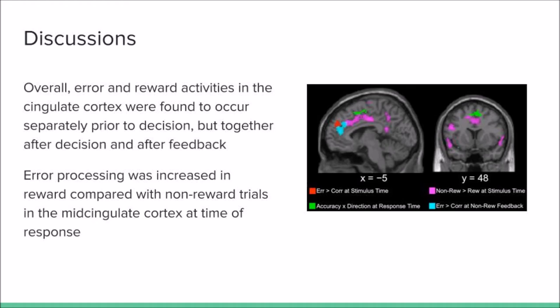The image on the right shows different areas of the cingulate cortex active, with the different colors showing activation at different periods of time. The green activity shows stronger error-related activity for the reward trials than the non-reward trials.